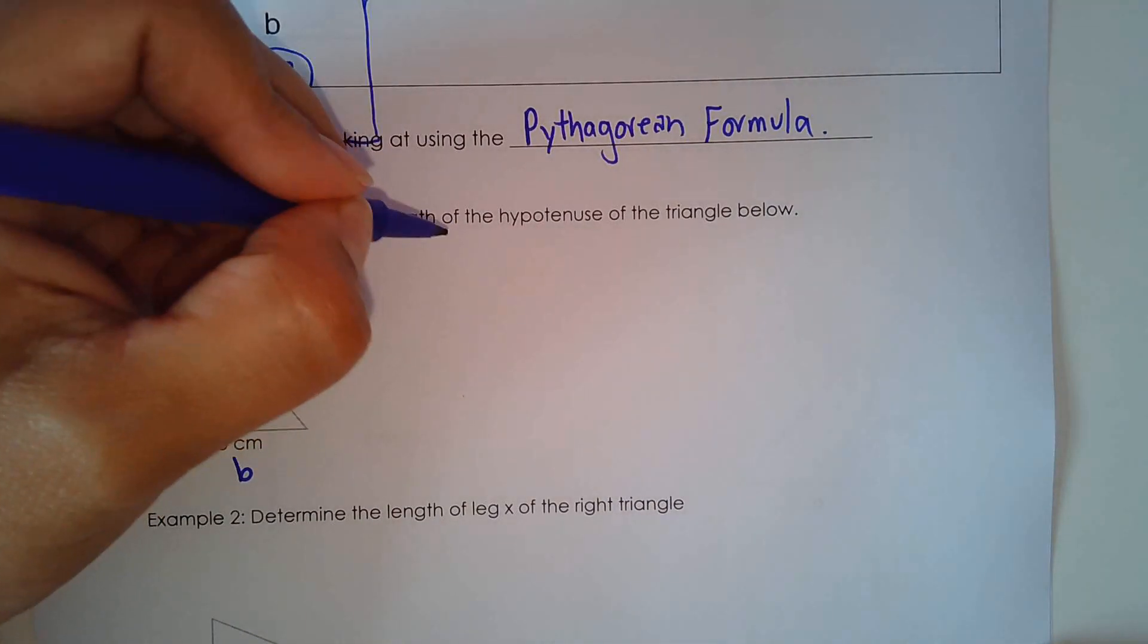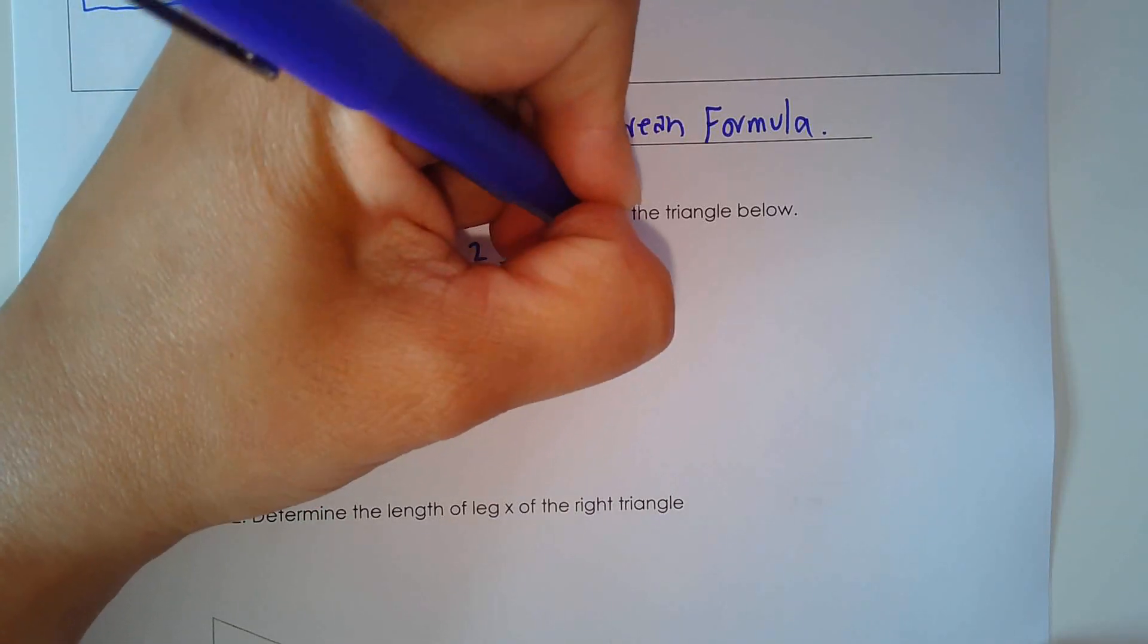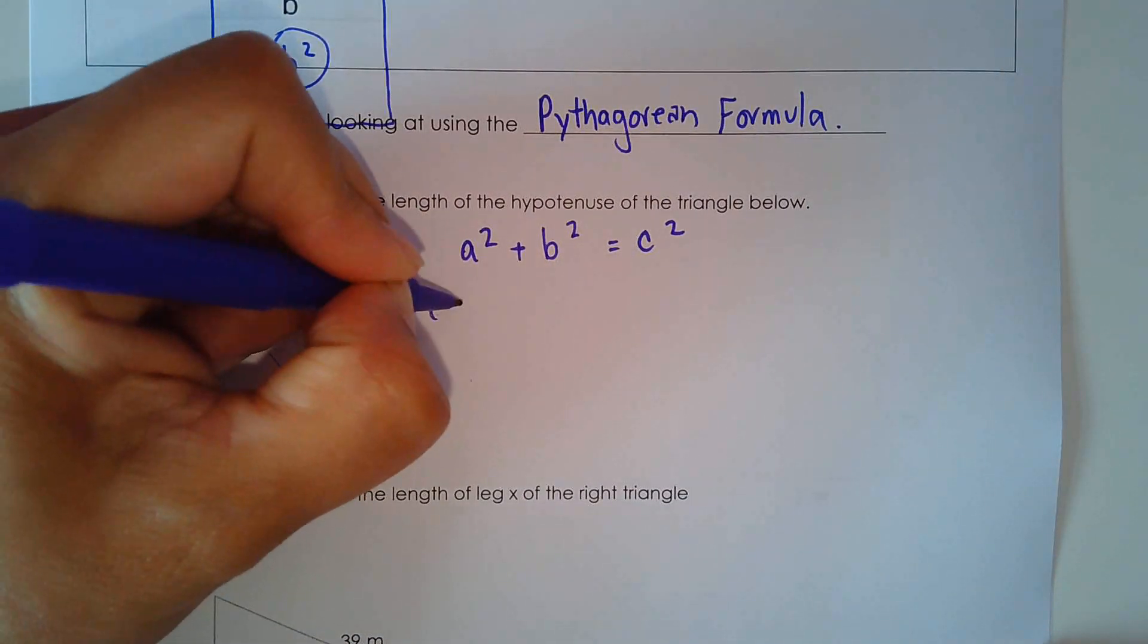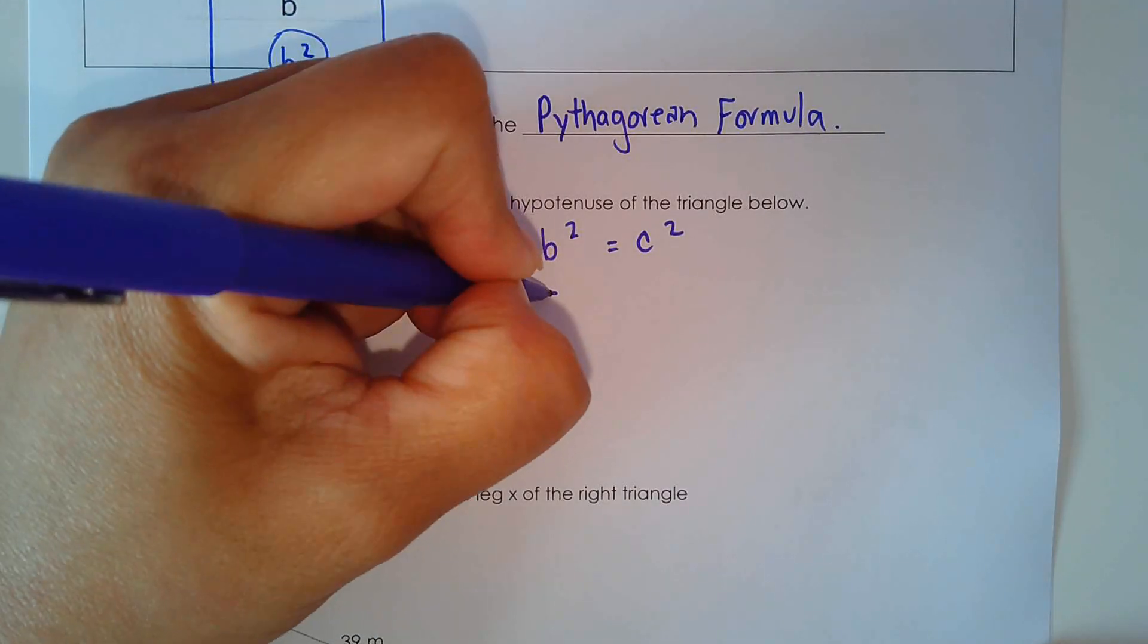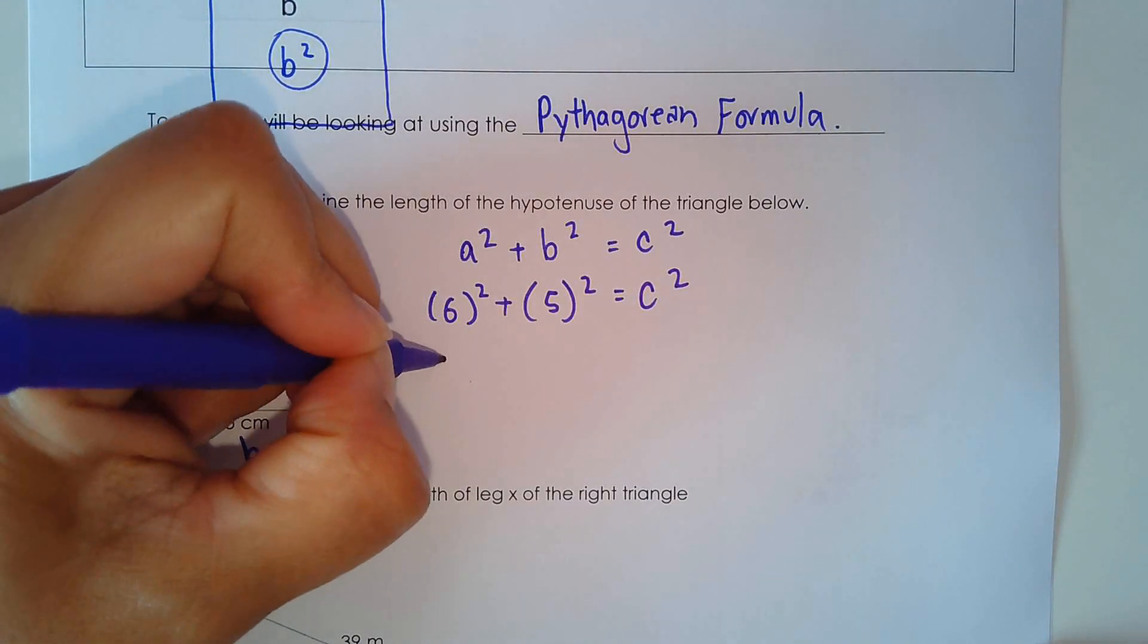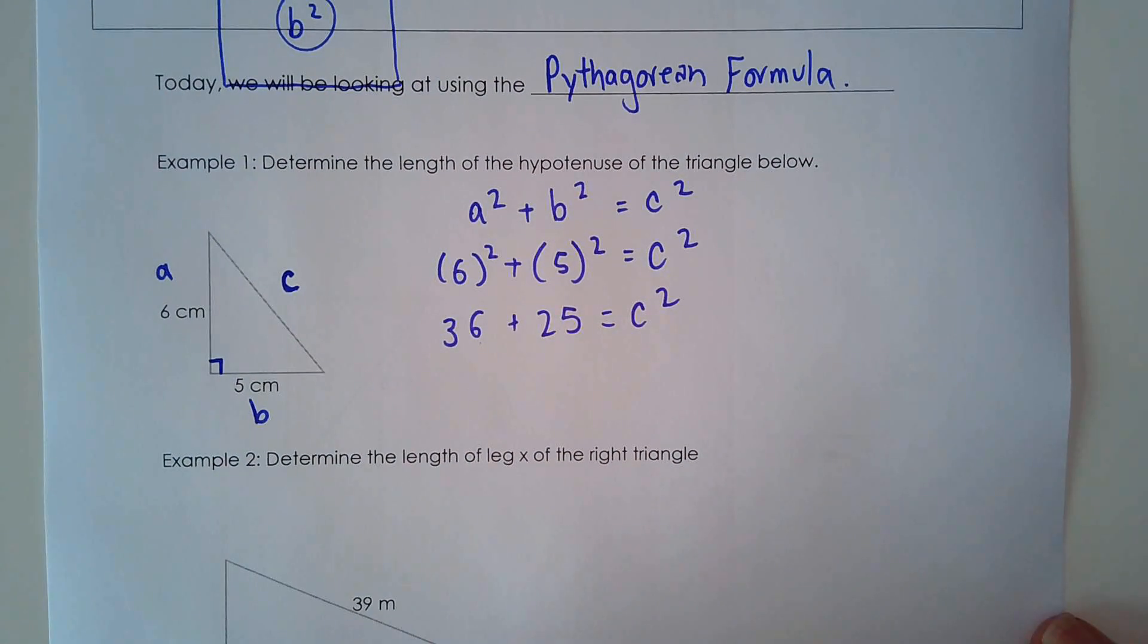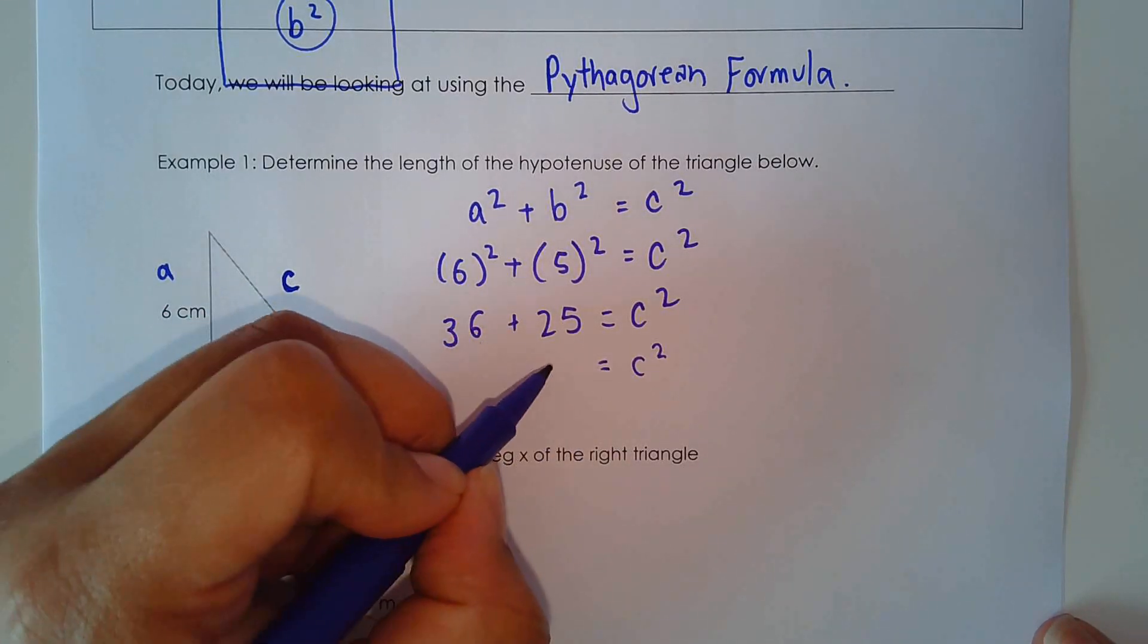I'm going to use the formula to find the length of side C. So the formula is A squared plus B squared equals C squared. And I plug in my values. So for A, I plug in 6. For B, I plug in 5. So 6 squared is 36. 5 squared is 25.